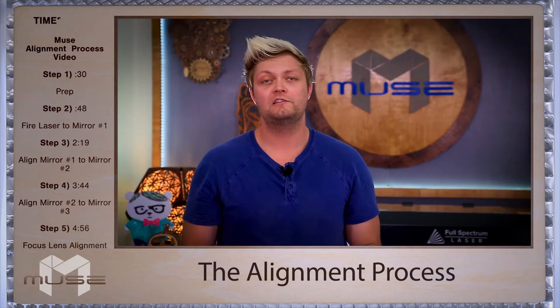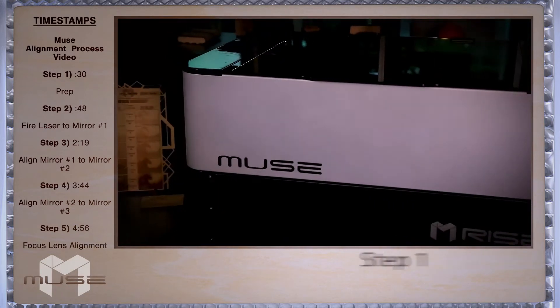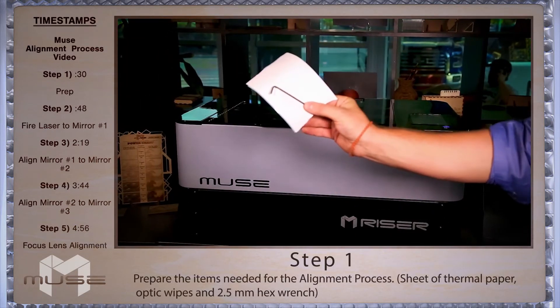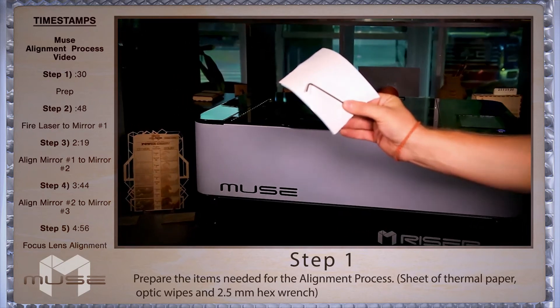The first stage is going to be prepping for your alignment. For this procedure we're going to need thermal paper, a 2.5 inch hex key and some optic wipes.